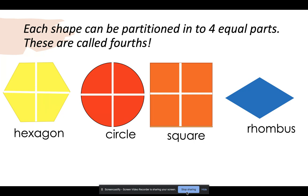And finally, we have a rhombus. The rhombus now is a whole. But once I cut it, it is in fourths. It has four equal parts. In order for the shapes to be called fourths, they have to be cut in four equal parts.